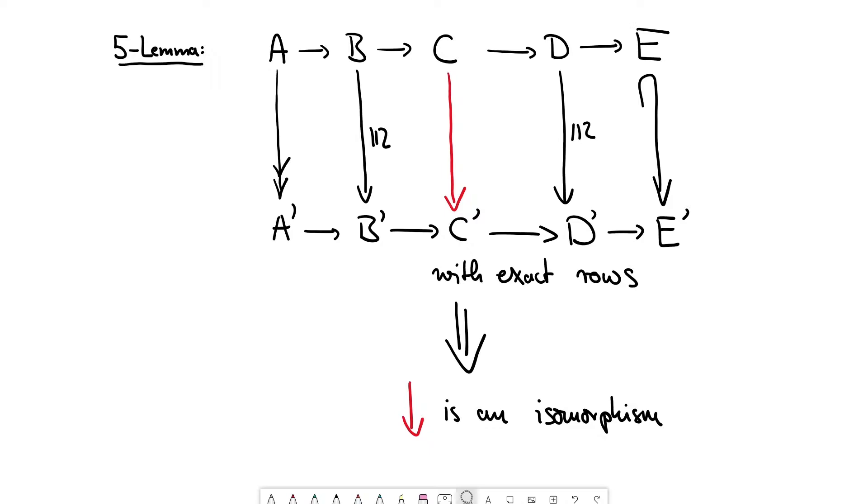And you're given maps such that you get a commutative diagram. You have an epimorphism from A to A prime, isomorphisms from B to B prime and D to D prime, and a monomorphism, an injective map from E to E prime, so that everything commutes and we have exact rows. And then the conclusion is that the middle arrow is also an isomorphism.